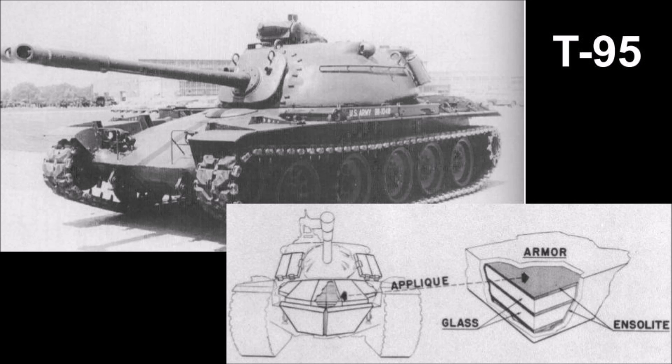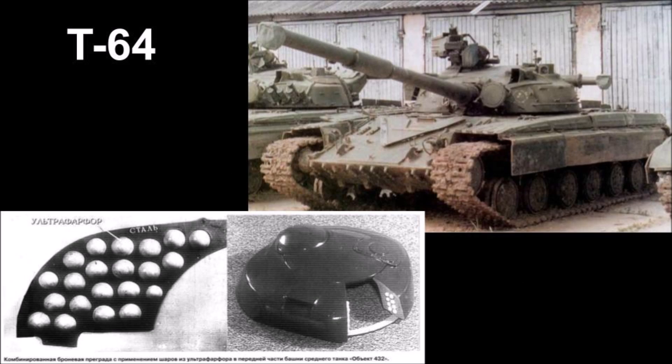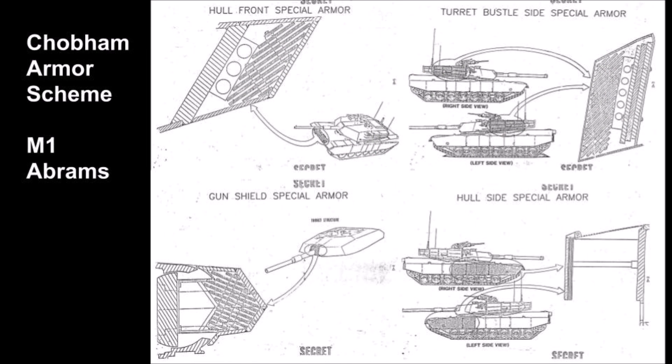The first experiments with this composite armor resulted in the prototype American T-95 tank that featured a glass composite layered into the armor called Insulite, and the Soviet T-64, initially using spherical ceramic inserts to disrupt shaped-charge penetrators. Today, composite armor is seen on many modern military vehicles, with the most well-known example being the Chobham armor on the M1 Abrams.